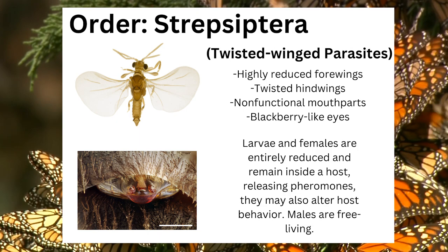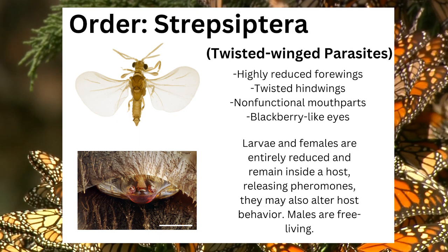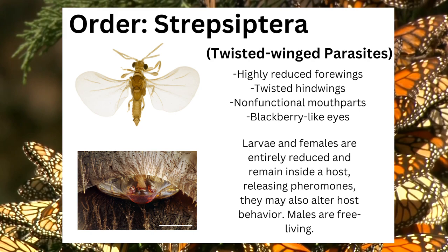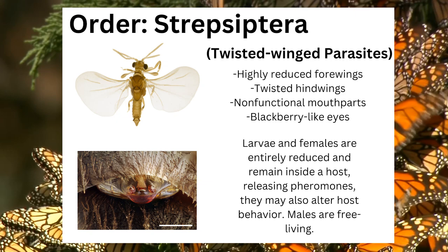Strepsiptera is the order of insects containing the twisted-wing parasites. They are notable for having highly reduced forewings, twisted hindwings, non-functional mouthparts, and blackberry-like eyes. Larvae and females are entirely reduced and remain inside of a host, releasing pheromones that may also alter the host's behavior. Males, however, are free-living.